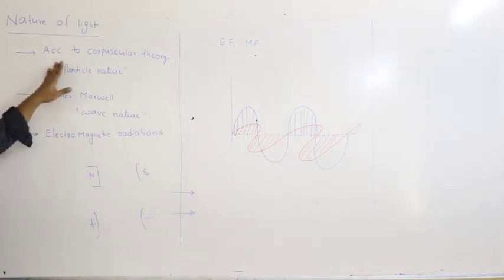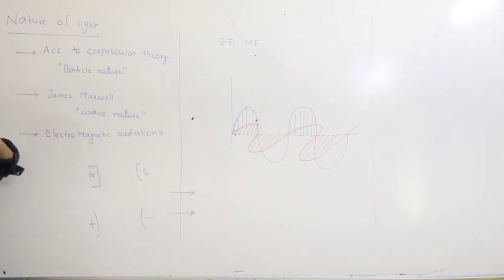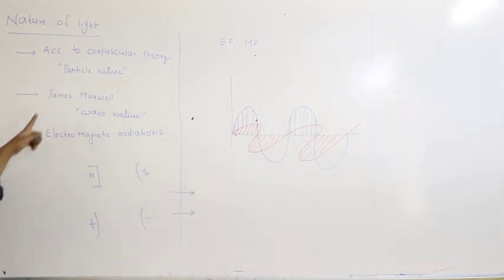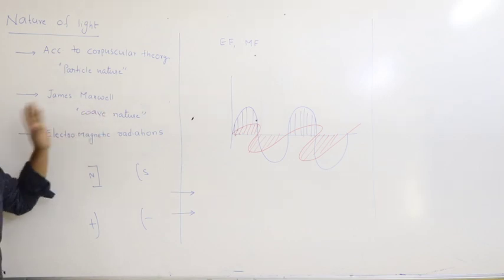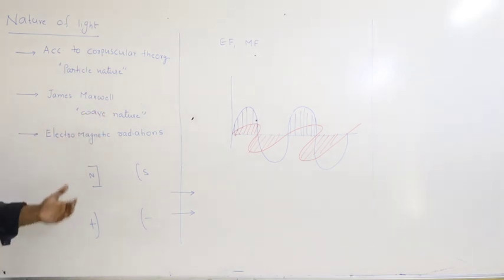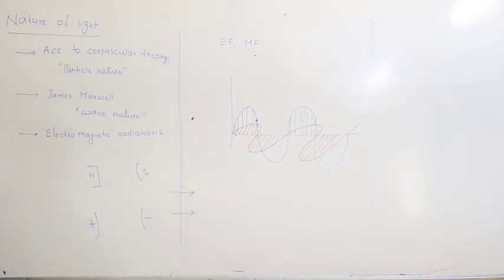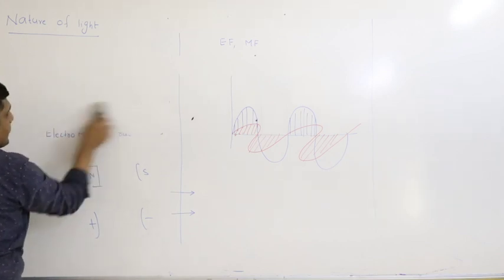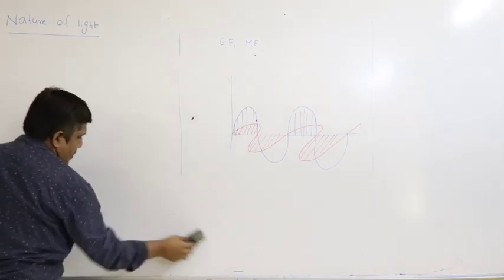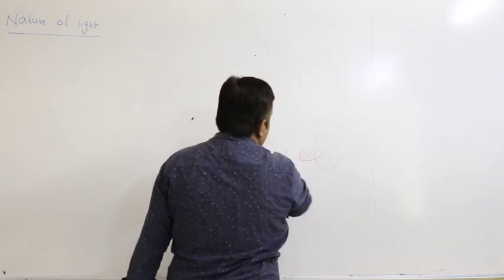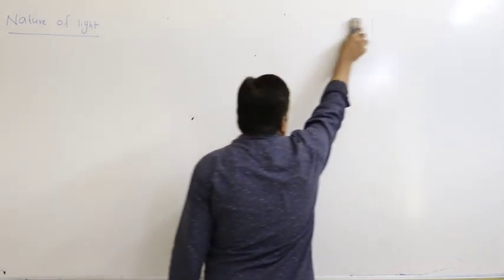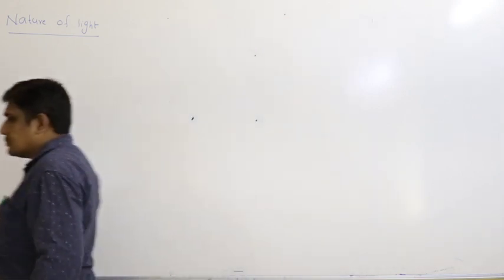To summarize what we have studied: corpuscular theory says light has particle nature but was able to explain only some properties. James Maxwell proposed that light has wave nature and travels in the form of waves. Now let us study the characteristics of waves.